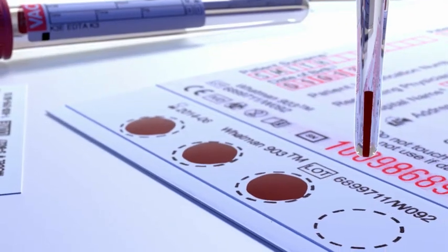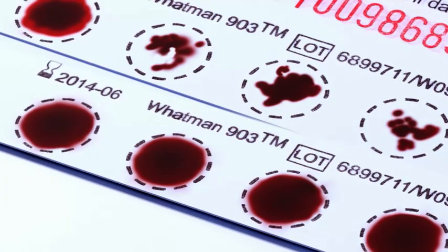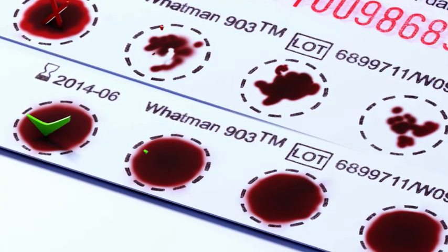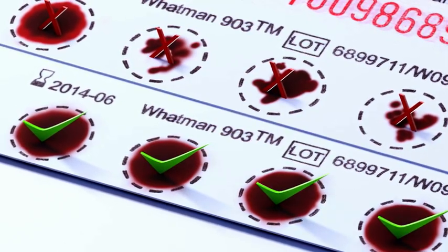Repeat the procedure for the three remaining circles of filter paper. Incorrect sample handling may lead to false positive results or sample rejection. Therefore, make sure the blood covers the whole of the circle.